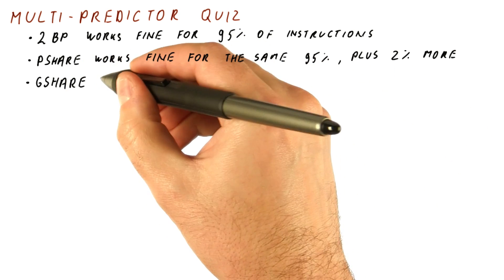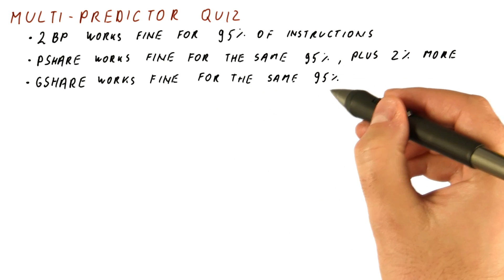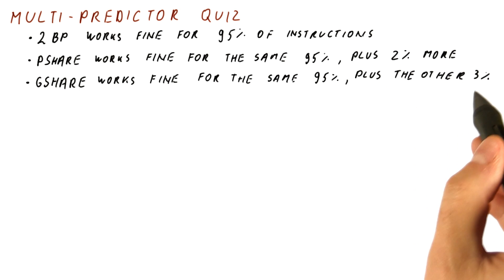A G-share predictor again works just fine for the same 95% that all the other predictors work fine for, plus it works fine for the other 3%. So overall it's 98% accurate.